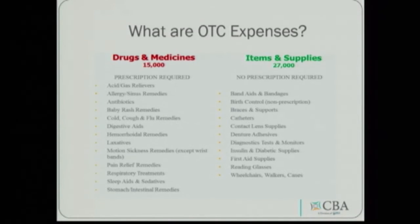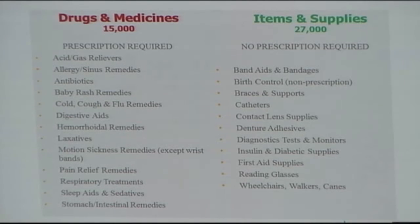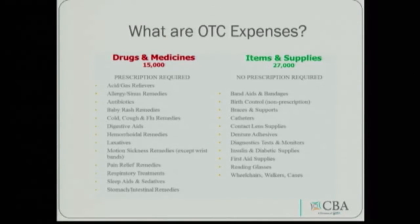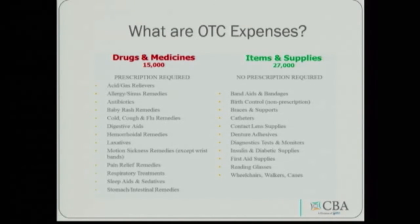There are also over-the-counter expenses for medical supplies — over 27,000 medical supplies that you can use your medical FSA for, like band-aids, first aid kits, even reading glasses. You may also use your medical FSA for over-the-counter drugs and medicines, provided that you have a prescription from your medical provider. So get a prescription from your doctor for things like aspirin and allergy medications so those expenses can be covered pre-tax annually.